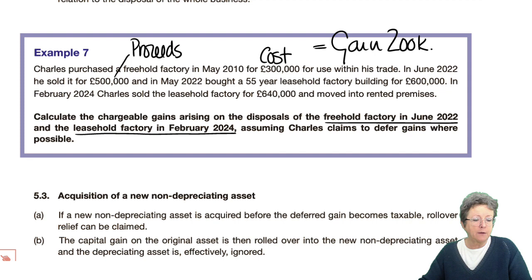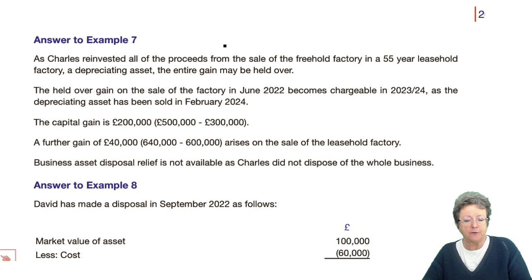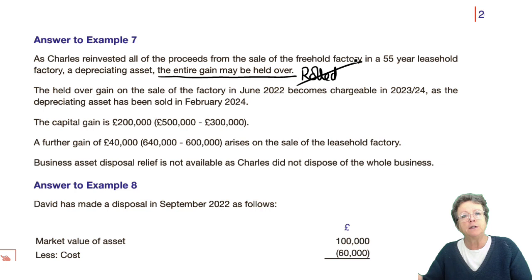As Charles reinvested all the proceeds from the sale of the factory into a leasehold property, and it is a depreciating asset, the entire gain can be held over — not rolled. Notice the difference: it's not rolled and therefore deducted as with the other ones, it's just held.